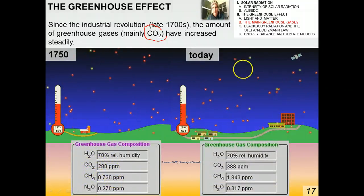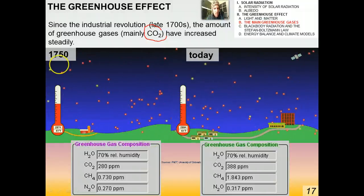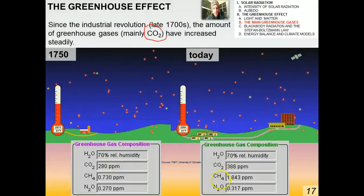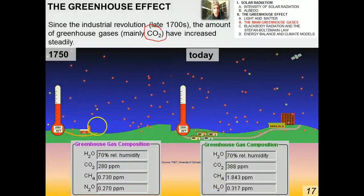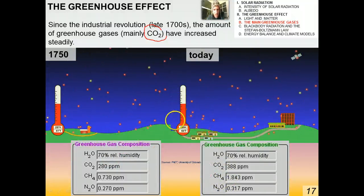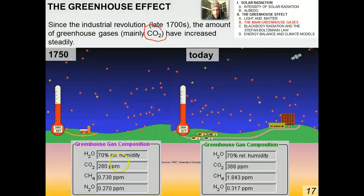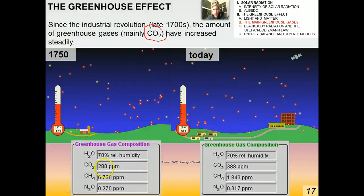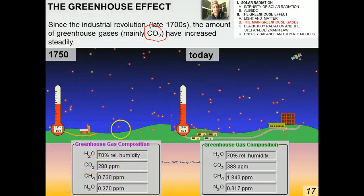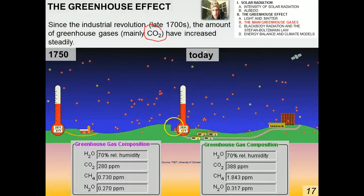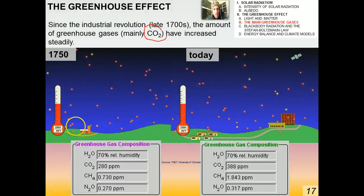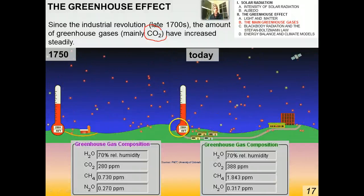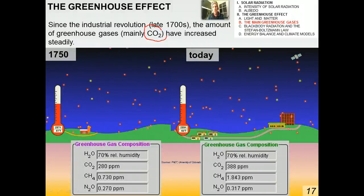If you go to today's levels in the simulation, you can see that the parts per million of all of these gases has increased significantly. But look at the temperature of the Earth: by increasing the amounts of these greenhouse gases by what seems a very small amount — around 100 parts per million for CO2 — it effectively raises the temperature of the Earth by about one degree Kelvin, or one degree Celsius. It doesn't seem like much, but over time it's going to add up.